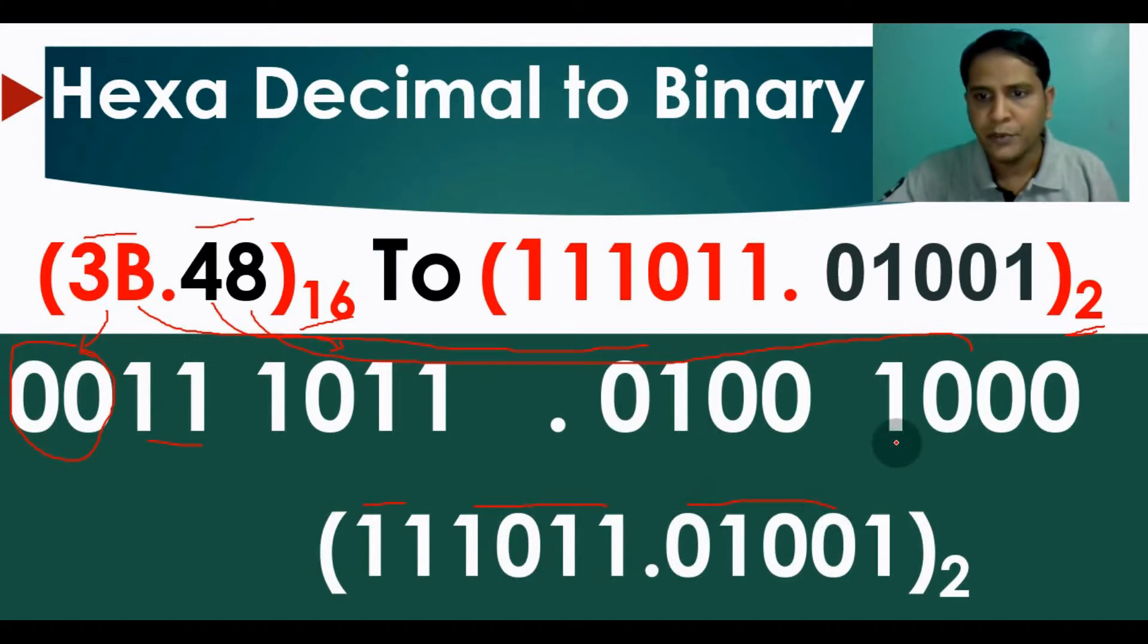And you have to only write 1 here. You can ignore these trailing zeros. So the equivalent value...